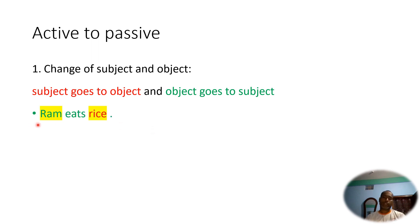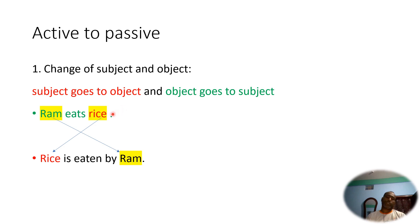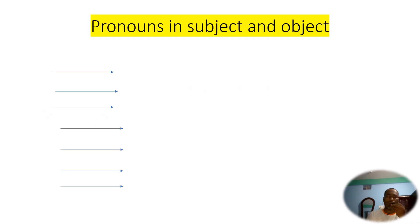Here is a sentence: 'Ram eats rice.' Ram is the subject and rice is the object. When made into passive, it becomes 'Rice is eaten by Ram.' We can see that Ram, which was in the subject position, is now in the object position, and rice, which was in the object position, is now in the subject position. In this way we reverse subject and object.